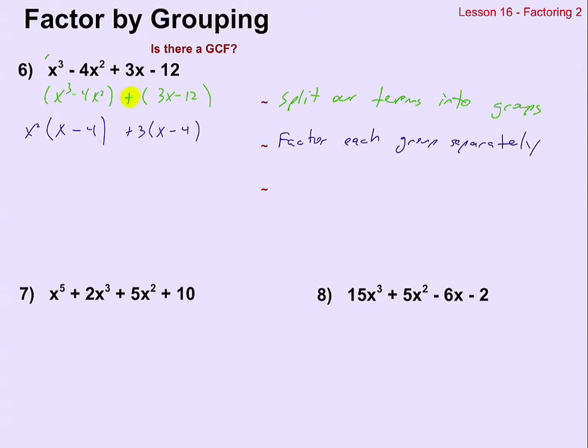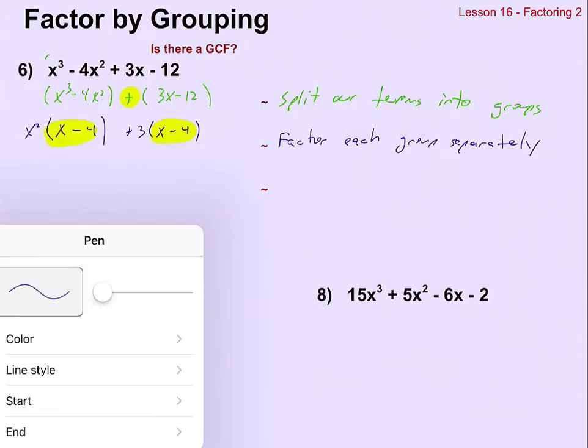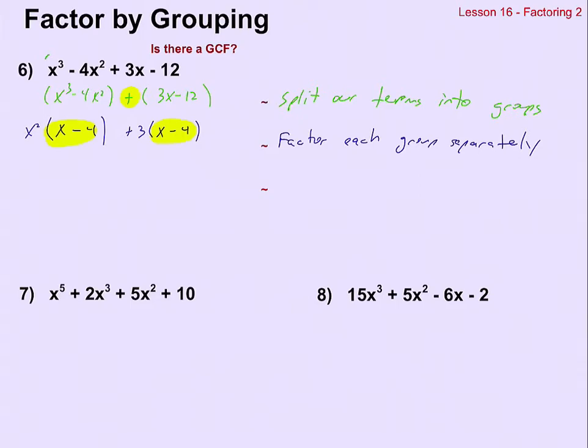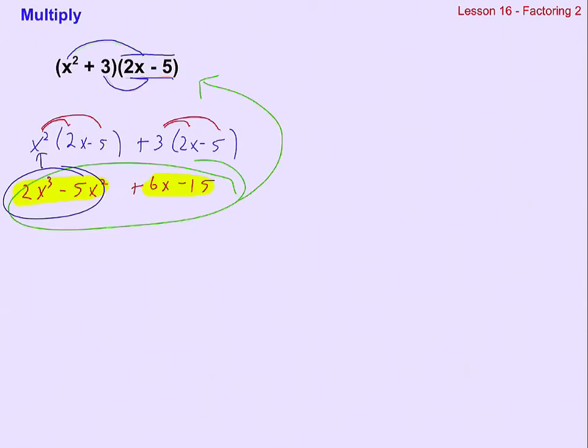What needs to happen in order for this to work is I need to see the same x minus 4 factor in both groups. If those two things are not the same, then this doesn't work and I can't factor this polynomial by grouping. But if it does work, our last step is to undistribute the common factor. Because that's what x minus 4 is now, it's a common factor. Just like in the problem before, when we multiplied x squared plus 3 times 2x minus 5.